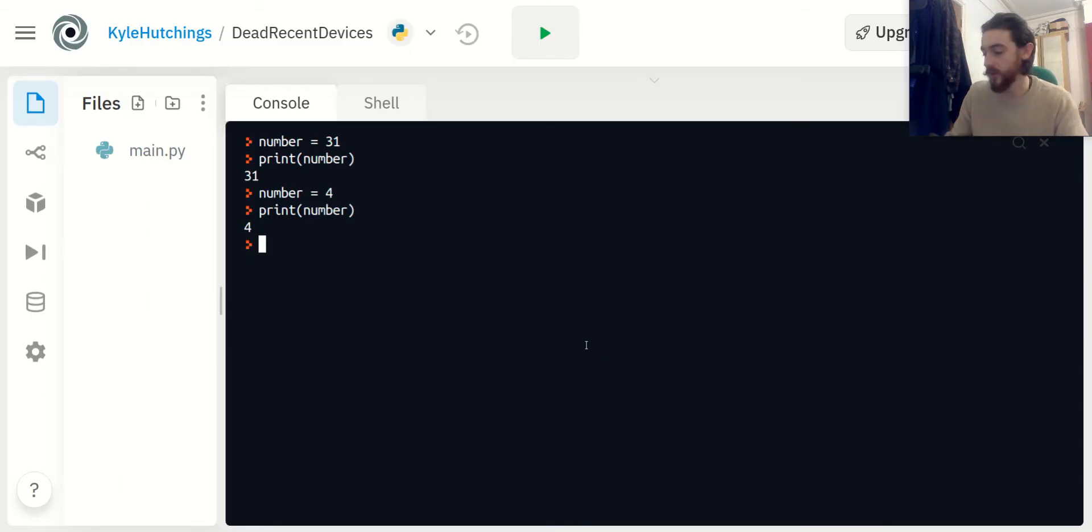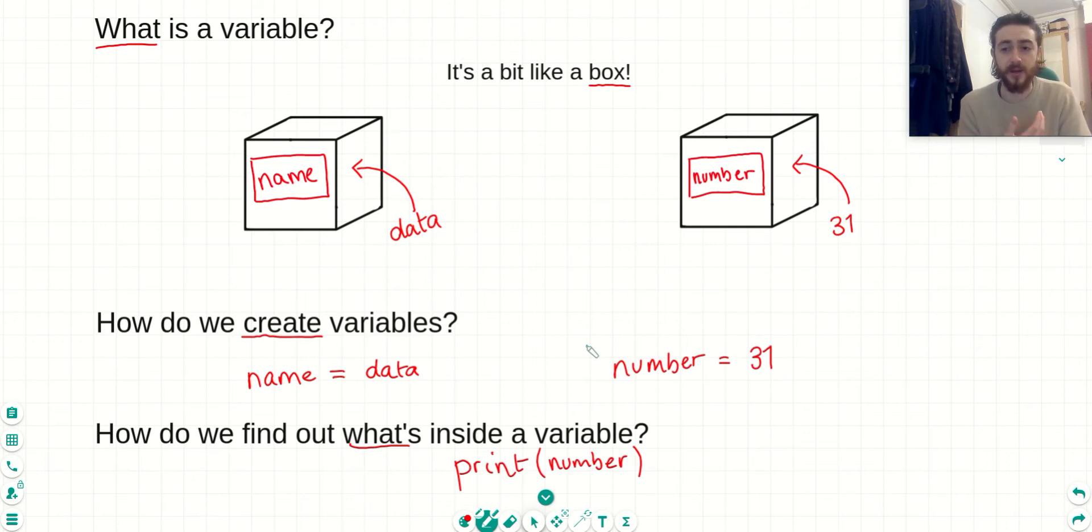So we hop over to some code real quick. We can say number is equal to 31 and we hit enter. And we now know that Python has seen that and created a variable for us. And we can double check that our variable exists and what's inside of it by printing off our variable called number, and we can see we get 31. Now what we can also do is say we don't like the number 31 anymore, we want to change what's inside of our variable, we can just put another value in there instead. So we call the same variable we've created before, and we change it to four. So now our variables data has been changed to four. And we can check that that's been done properly by printing off number again, and we can see that it's now four.